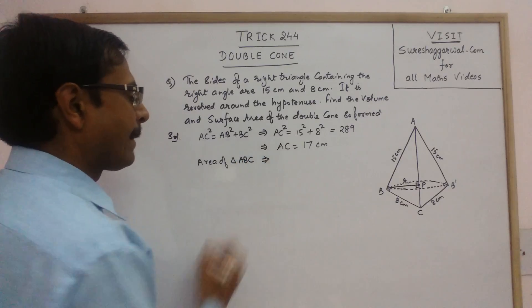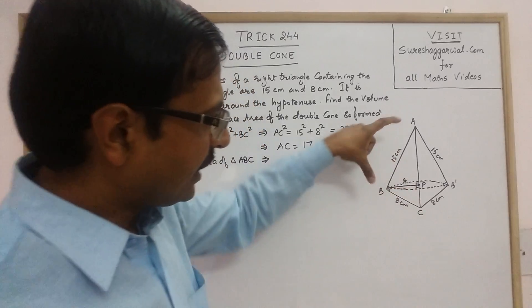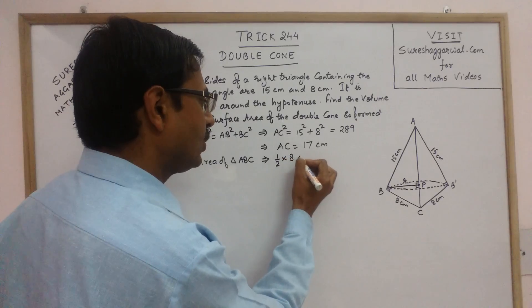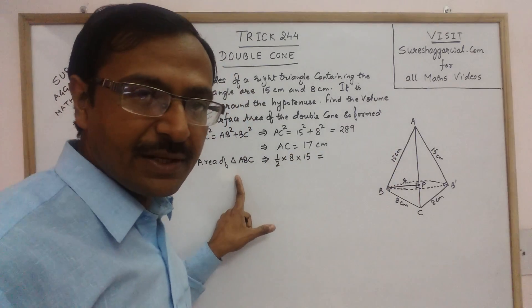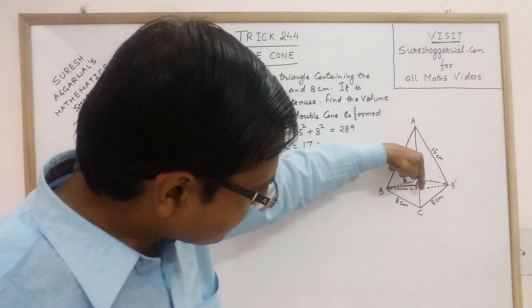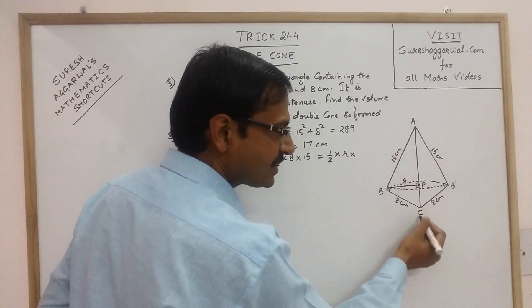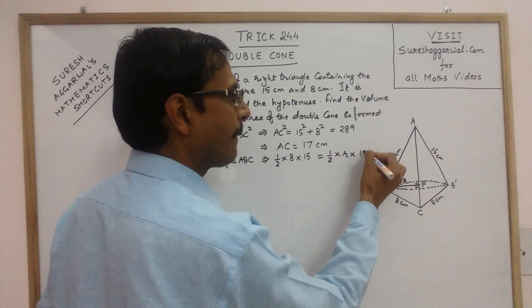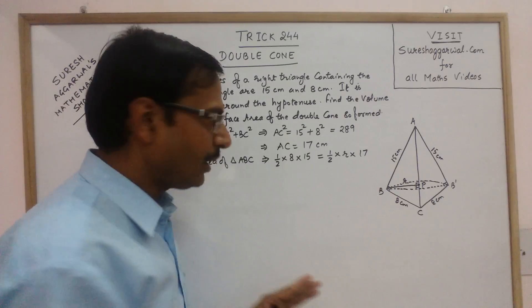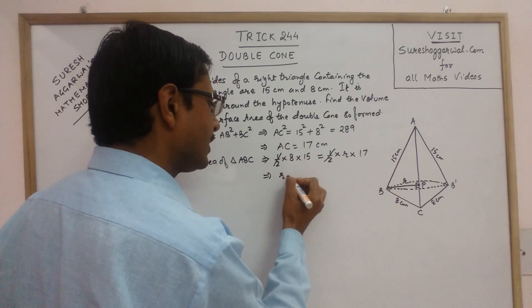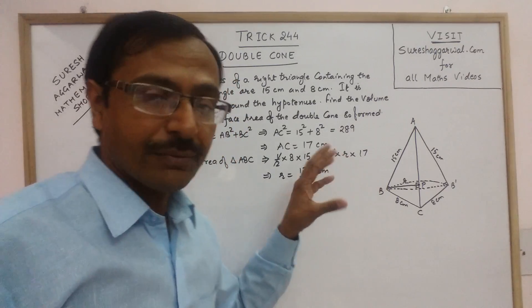Now, area of triangle ABC, we can find out by using two different bases. If you take BC as base, then AB is the perpendicular. So, half into base into height. This is the area of triangle ABC, half into base into height. Or, you can find the area of triangle ABC in another way. Now, I am considering AC as the base. So, obviously, PB will be the height. So, half into PB that is R into height. Height is R and base is AC. AC, how much we have found out? That is 17. So, take two different bases, half into base into height and half into base into height and just equate the two because it is the area of the same triangle. You get the value of the radius that is 120 upon 17 centimeter. Now, these are the two very important steps for finding the unknown dimensions of this double cone.